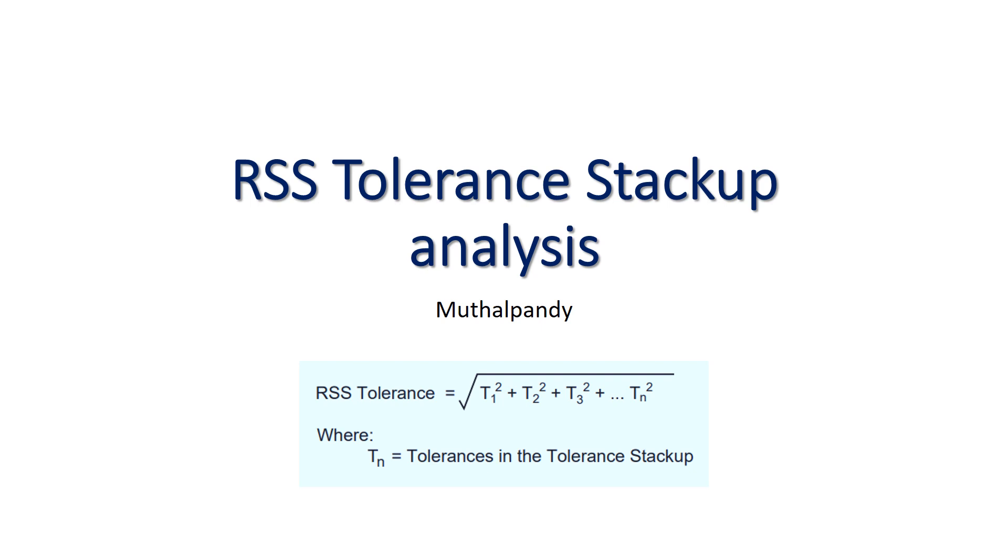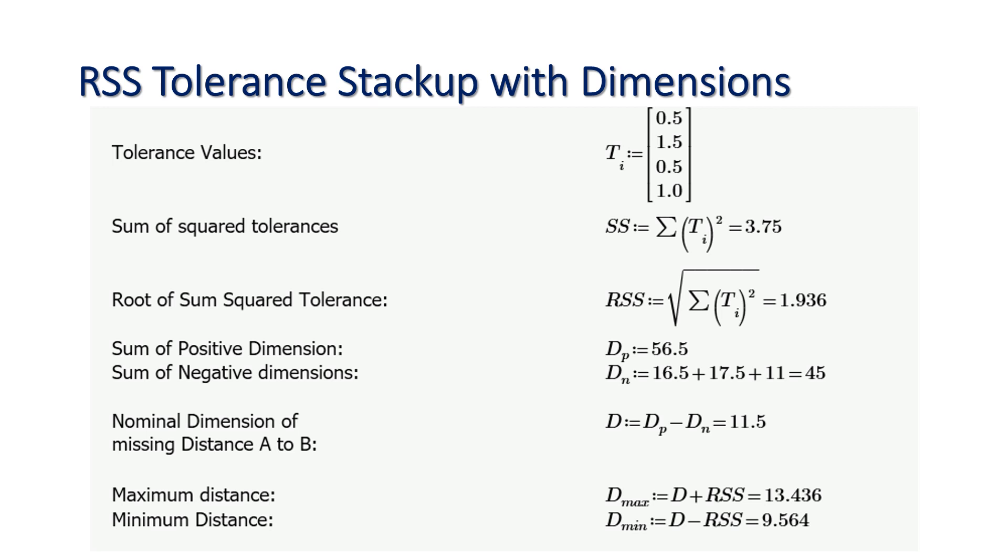Let us take a look at RSS tolerance stackup analysis. The RSS tolerance is nothing but the square root of all the tolerances in the functional loop. Sum of all the tolerances in the functional RSS tolerance, the tolerance values...